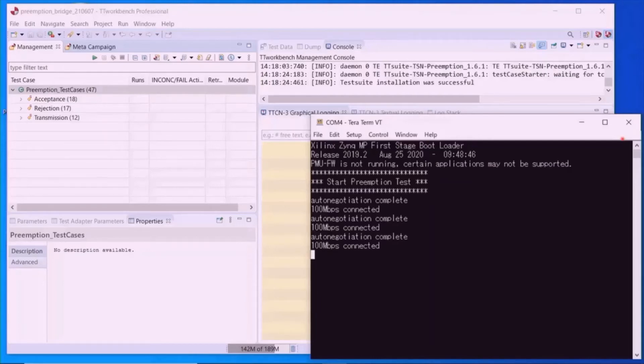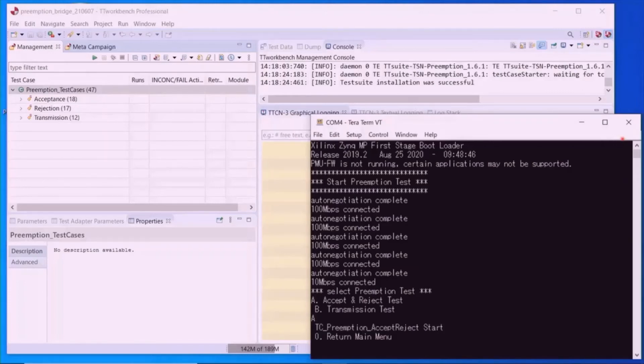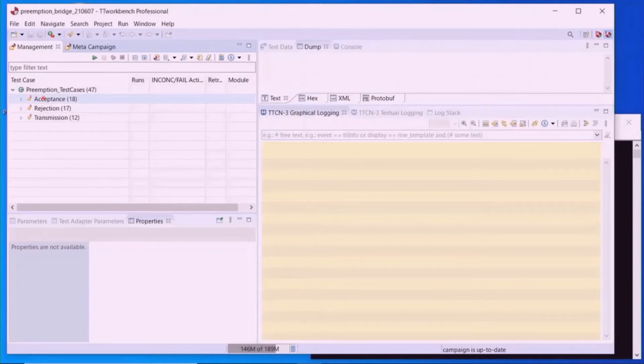When FPGA is booted, a message will be displayed on this console screen. After booting, set the switch and PHY at a link speed of 100 megabits per second of auto-negotiation. When all the settings are completed, a test selection message will be displayed. Select test accept and the FPGA settings are complete.